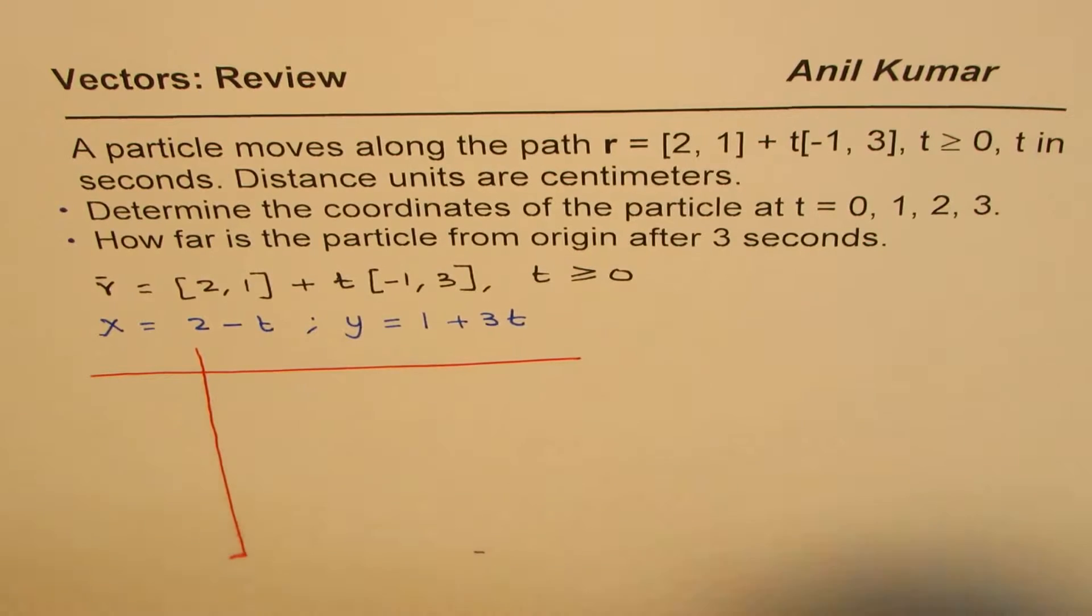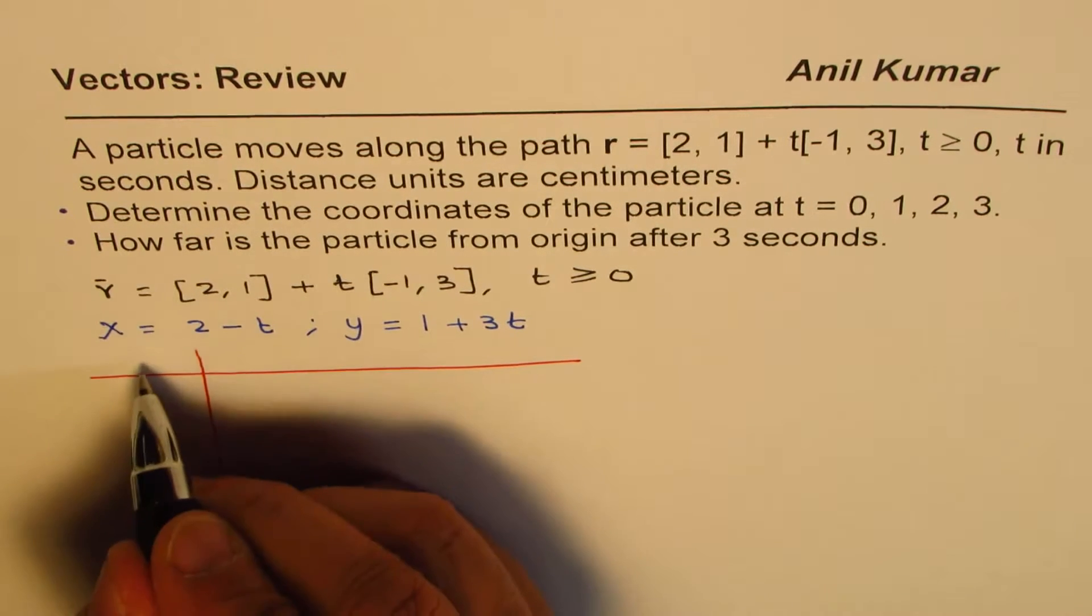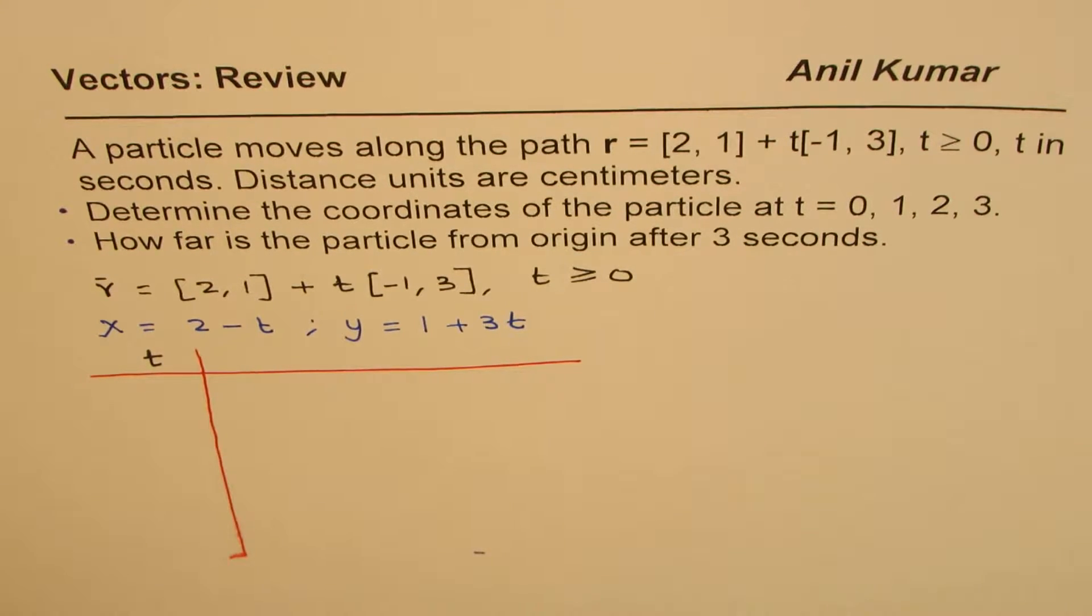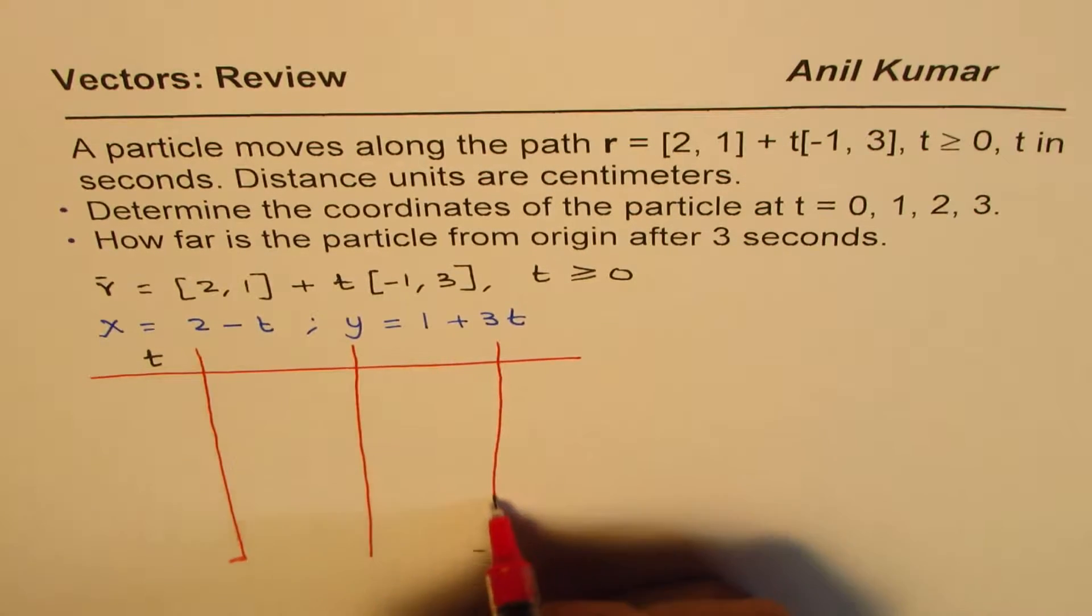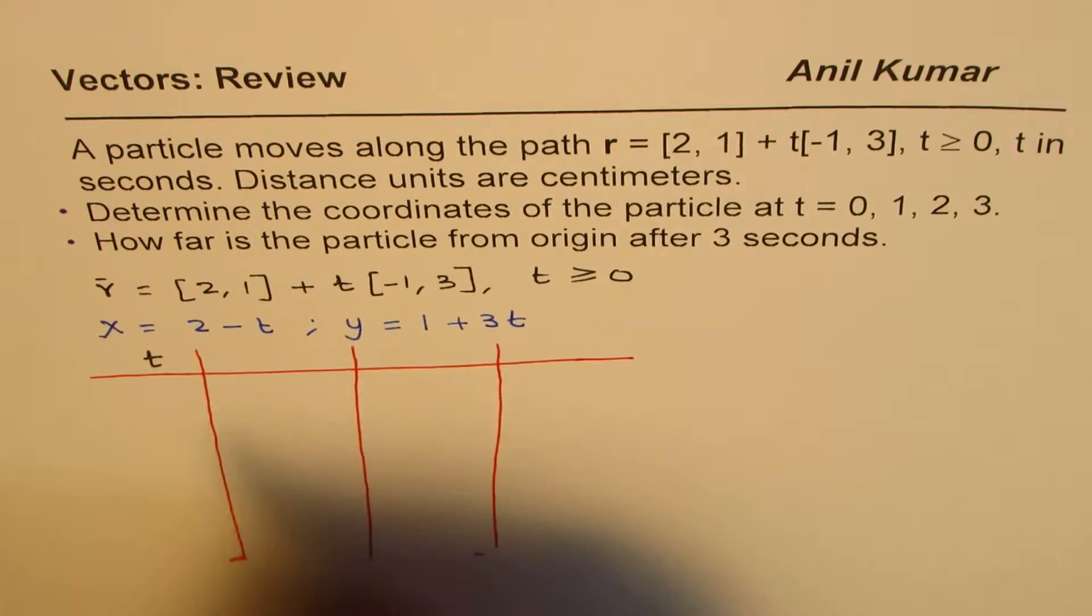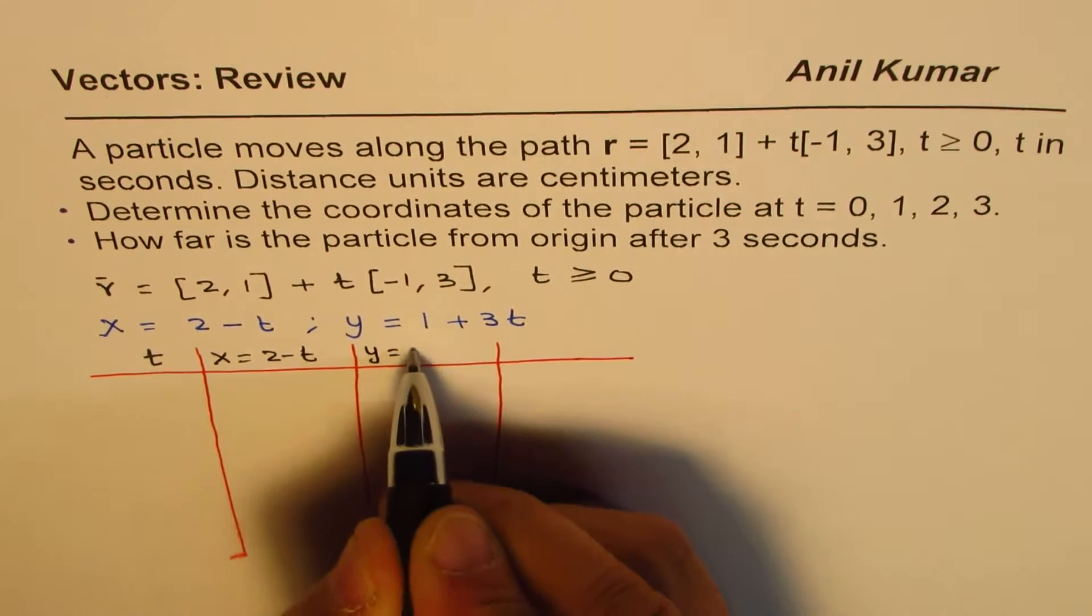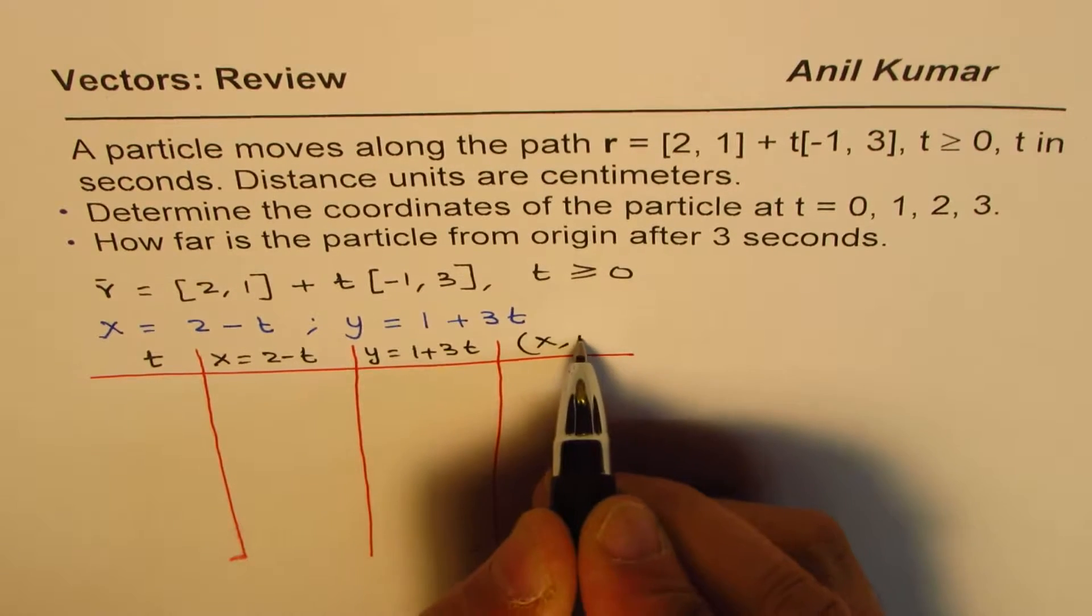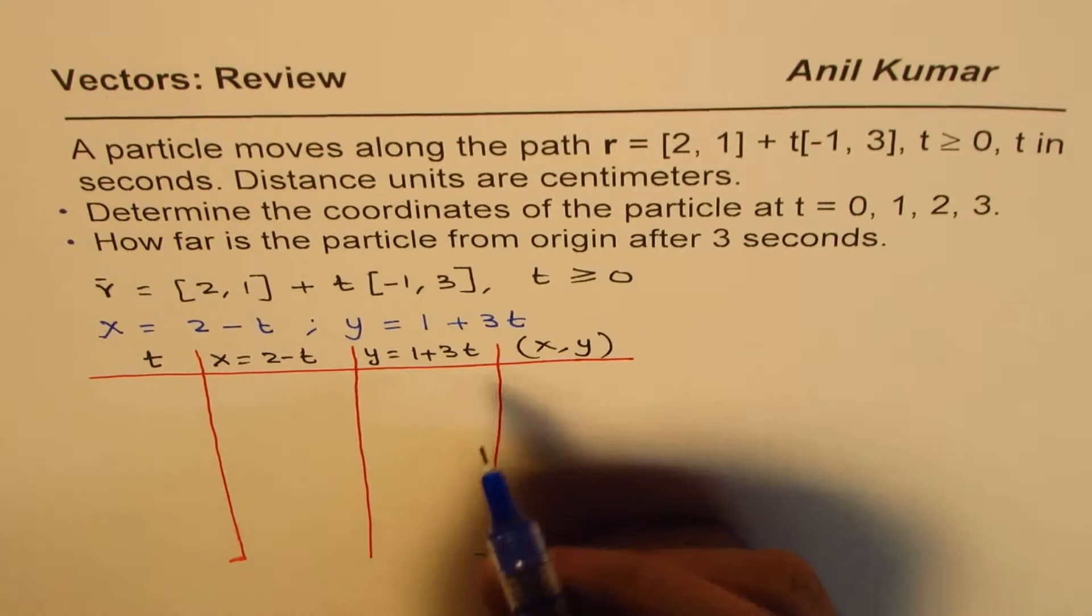So let's make a table where we can have t values in one column and then we can calculate x and y values. We'll calculate x and y values using these equations and then we can write down the coordinate points here. So we'll say x equals 2 minus t, y equals 1 plus 3t and that is the coordinate point (x,y) for us. So let's fill in this table.